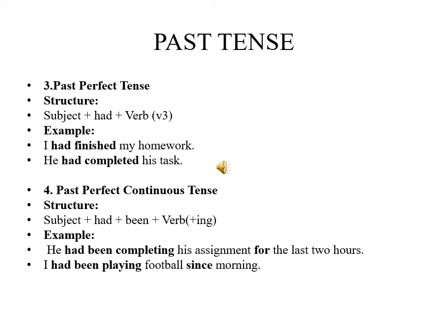Fourth type of past tense is past perfect continuous tense. Its structure is subject plus had plus been plus verb fourth form, that is ING form. Example, he had been completing his assignment for the last two hours. I have been playing football since morning.